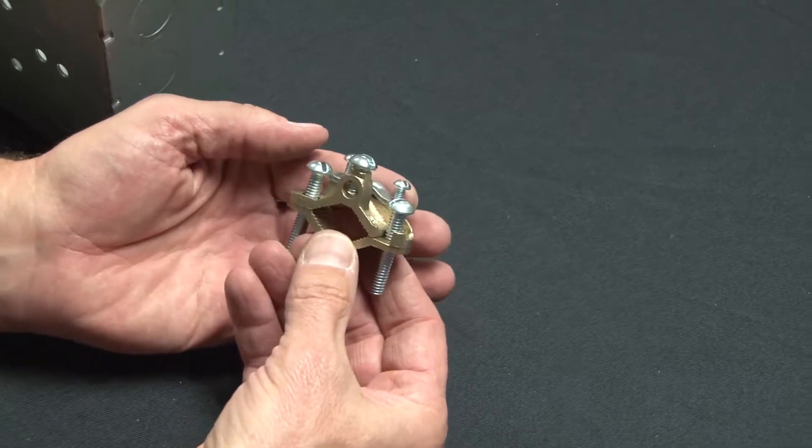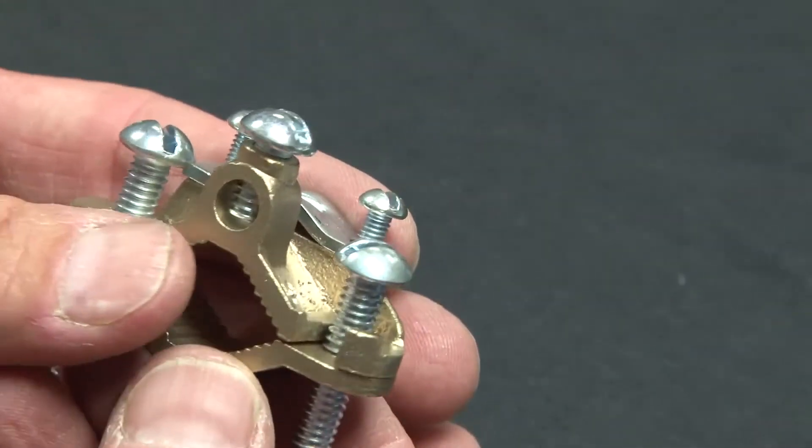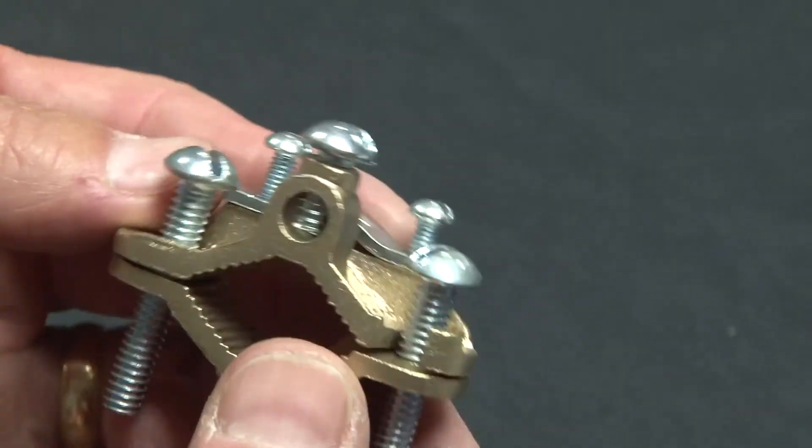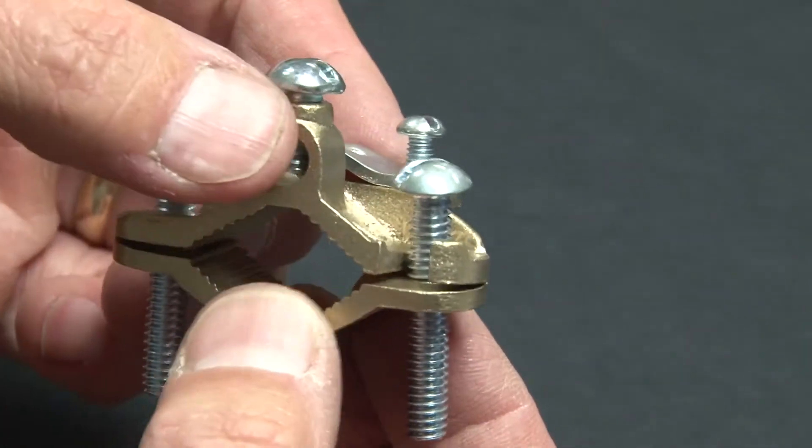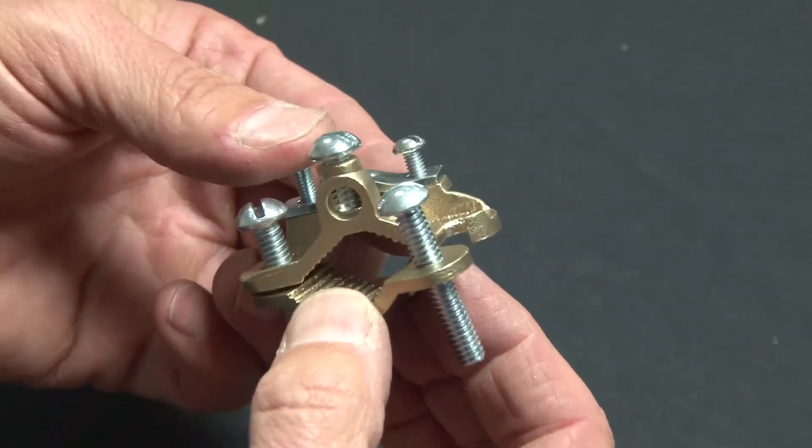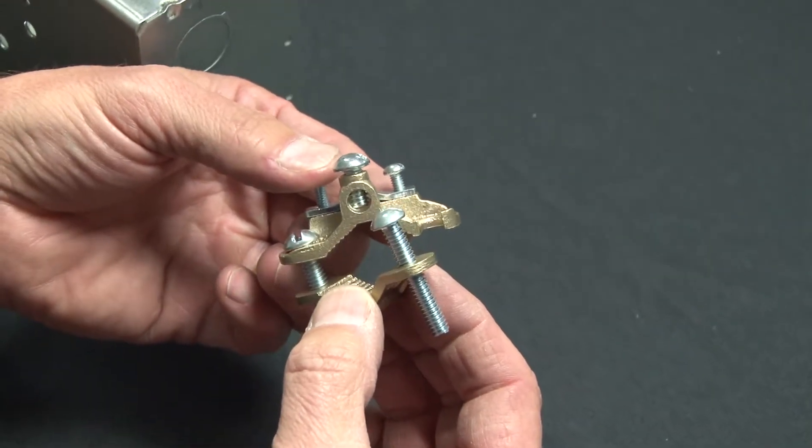Garvin Industries water pipe ground clamps are made from brass or bronze, have zinc plated screws, and have a split body so they can easily be attached to any water pipe or other approved grounding pipe.